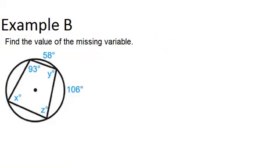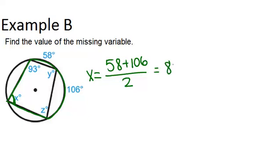In example B, it says find the value of the missing variable. And it looks like we have three variables to figure out: x, y, and z. So first let's try to figure out x. Angle x is an inscribed angle, and the arc that it intercepts is this full arc, so 58 plus 106. In order to figure out x, we have to add up 58 plus 106 because that's the full arc, and then divide it by 2 because it's an inscribed angle. So x is going to equal 58 plus 106 divided by 2, which is 82 degrees.